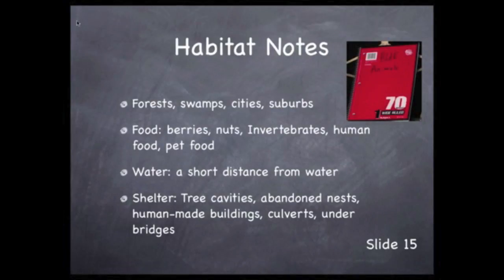We're scanning this wildlife card for facts, writing down information from the source, not the wording between the facts. Here are some helpful notes: forests, swamps, urban, suburban. For food, we wrote down nuts, seeds, berries, invertebrates, plants, human food, pet food. For water, we wrote that they choose to live a short distance from water. For shelter, we wrote down cavities in trees, abandoned nests of other animals, and dwellings made by humans.